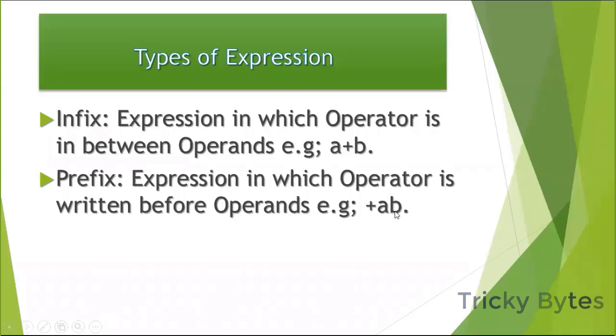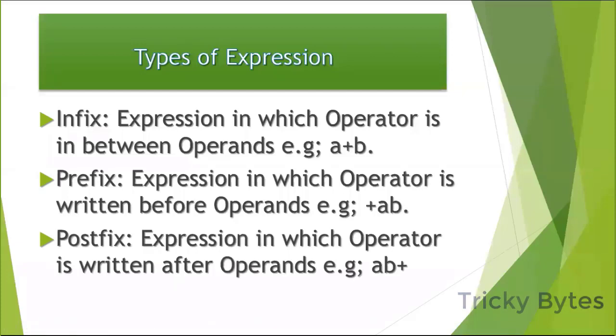We have prefix, which means before—the operator comes before the operands, like plus a b. Then we have postfix, which means after—the operator comes after the operands, like a b plus. These are the types: infix has the operator between operands, prefix has it before, and postfix has it after.